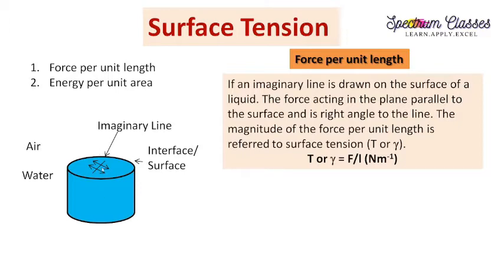The important thing is: there is no force acting in the upward or downward direction — it is parallel to the surface. The force acting on the imaginary line is in the plane parallel to the surface, at right angle to the line, in either direction. The magnitude of that force per unit length — if we consider the length of this line to be one centimeter in CGS — is what we define as surface tension.